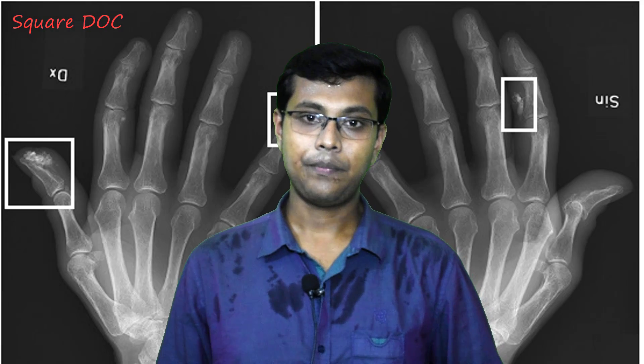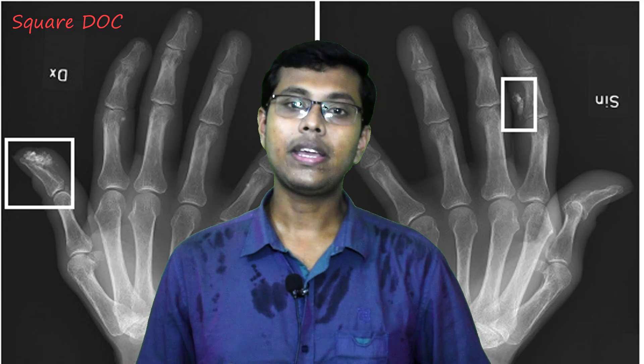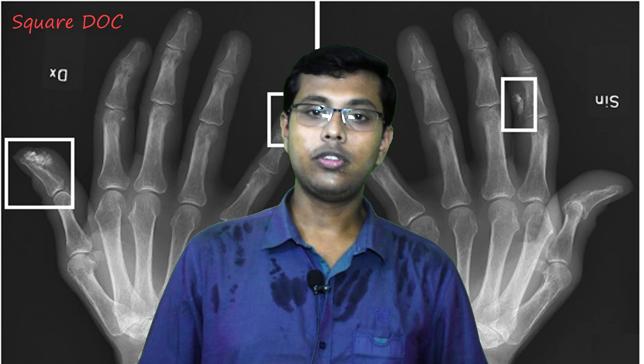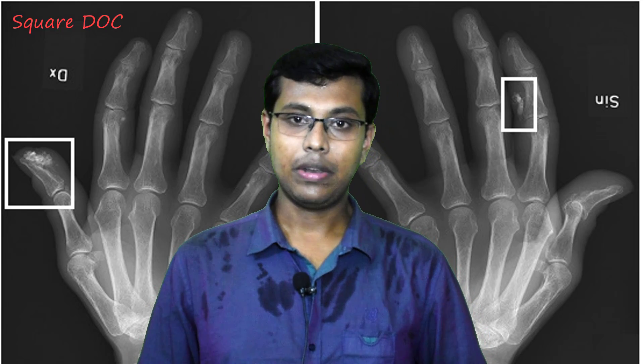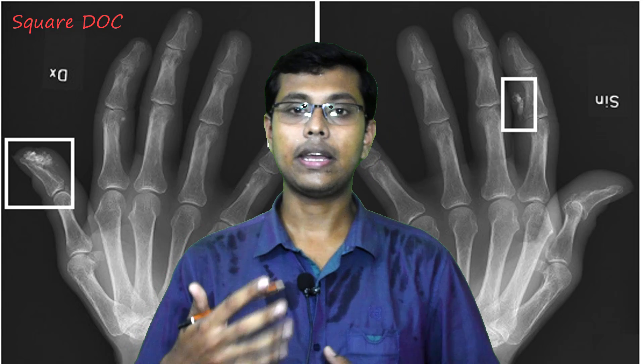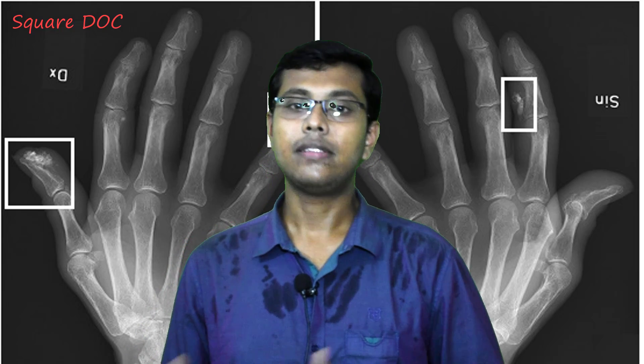The inflammatory reaction causes cell necrosis and cell death. When the cell dies, calcium is deposited in the dead cell. This calcium deposition is called dystrophic calcification, and this process is called calcinosis.